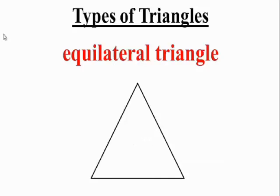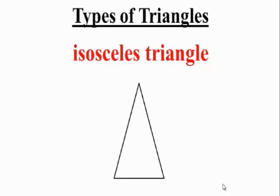But there are different types of triangles. This one that you see is called an equilateral triangle. The reason it's called equilateral is because it has three sides that are equal in length. So if we were to measure the length of all three sides, they would be exactly equal.